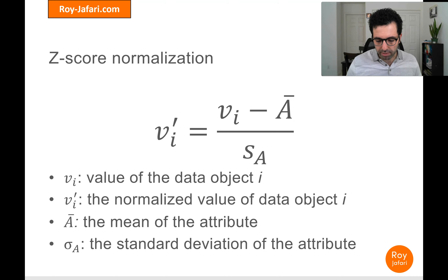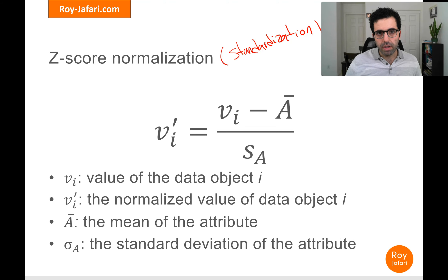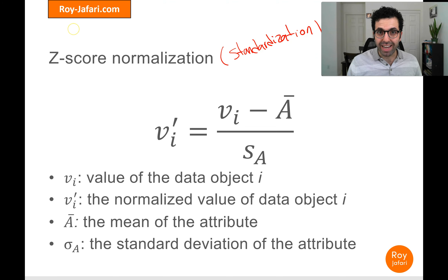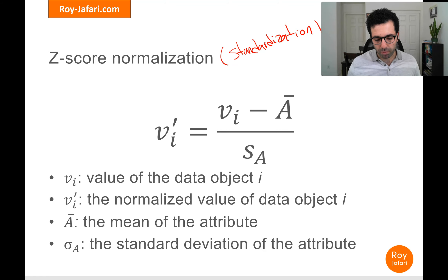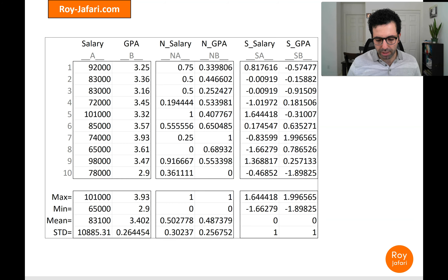Then we have Z-score normalization, also known as standardization. The formula is simpler here: you subtract the mean of the attribute from the original value, and then divide that by the standard deviation of the attribute. This is a much simpler formula than the min-max normalization one.